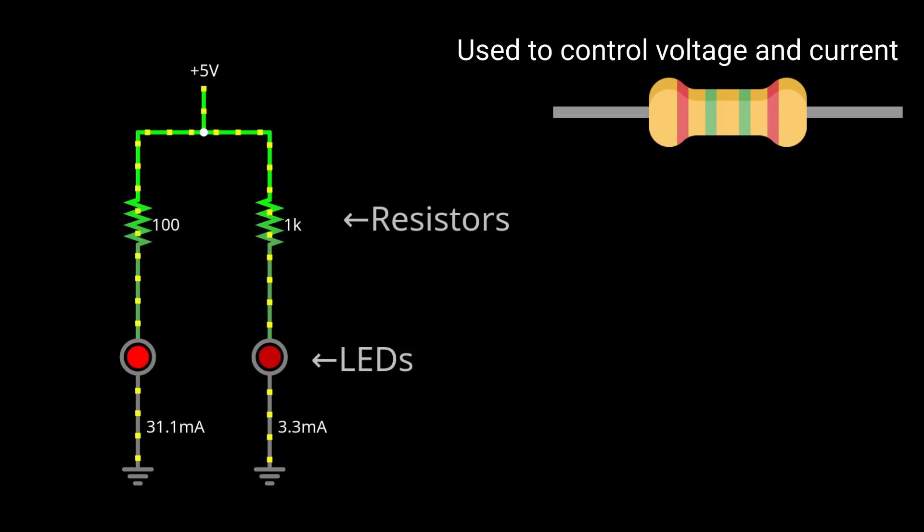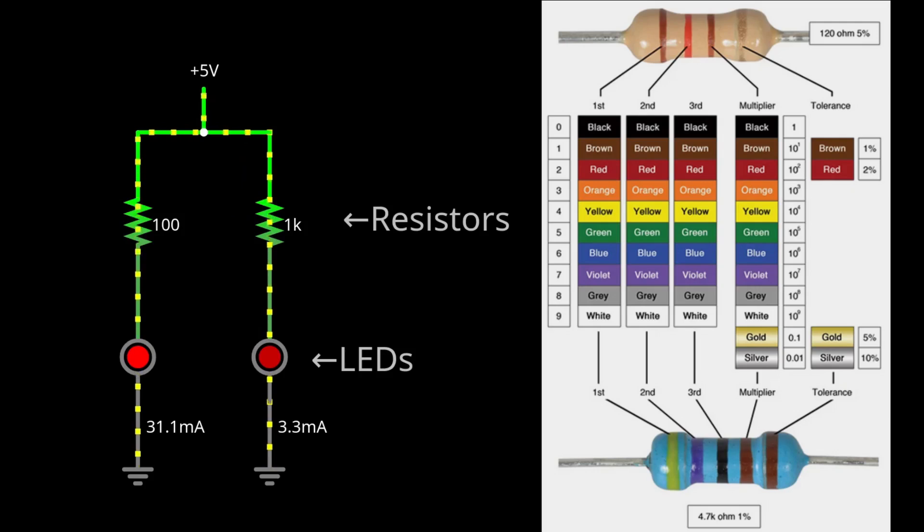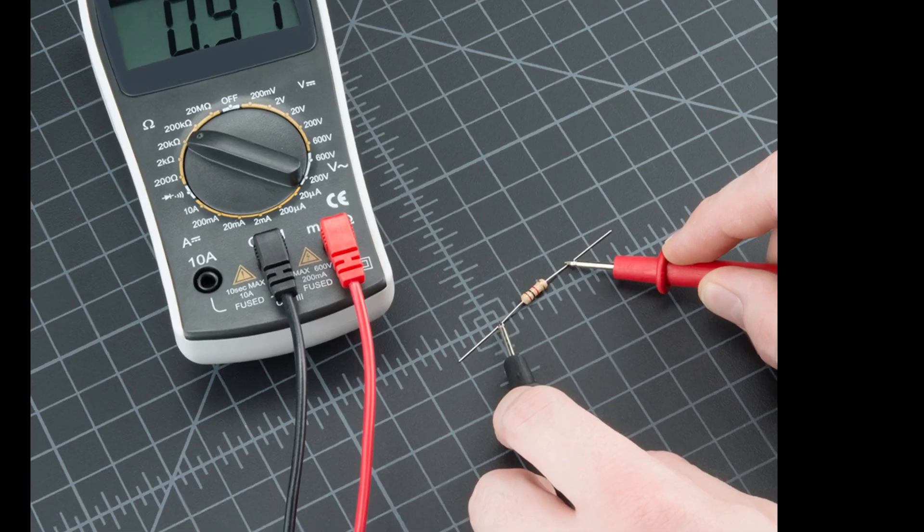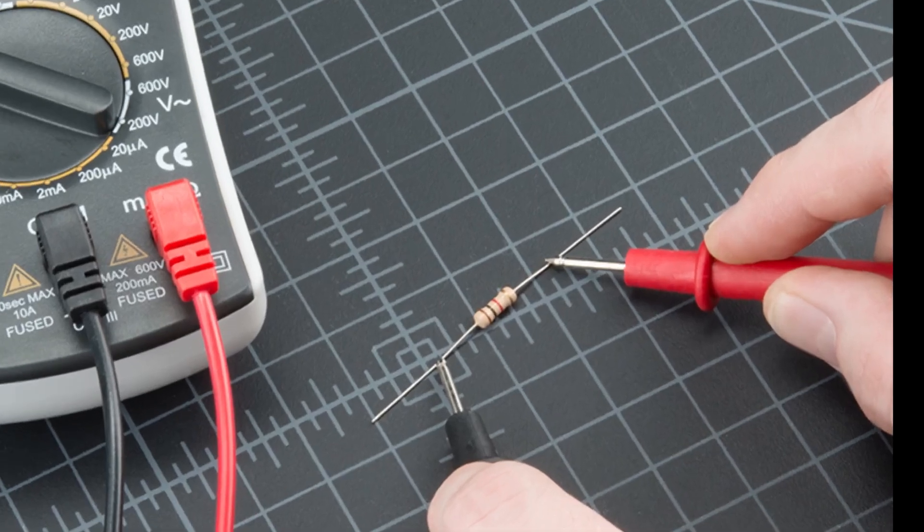To measure how much resistance they provide, we use the ohm unit. Most resistors have color bands that can be decoded to find how many ohms a resistor provides. Alternatively, you can also measure it with a multimeter.